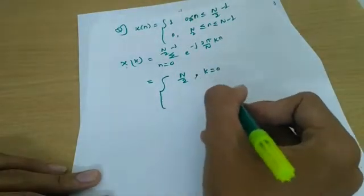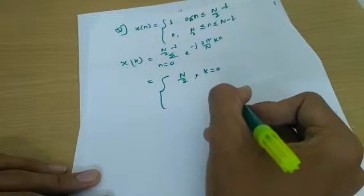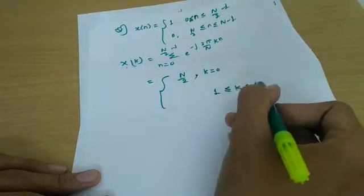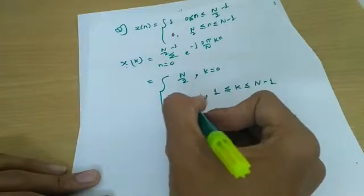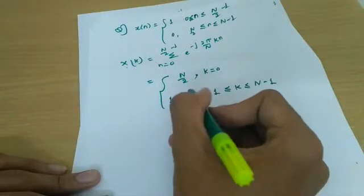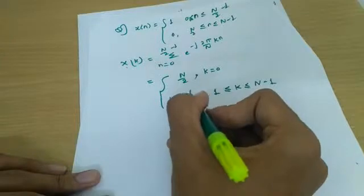Now for k, the remaining values of k are from 1 to n minus 1. This is the same as an infinite GP, so we can write it like this.